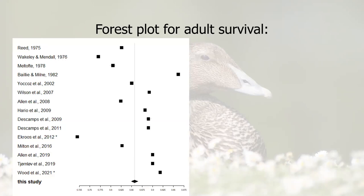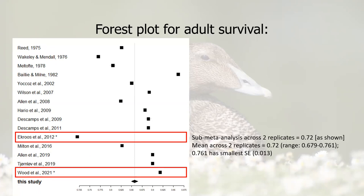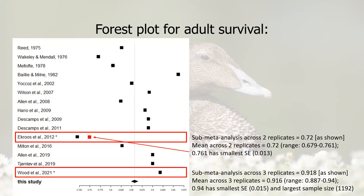To illustrate: the forest plot for adult survival has cases where we've used the sub-meta-analysis coded with an asterisk. For the Acrucetel 2012 case, we conducted a sub-meta-analysis across two replicates, giving a value of 0.72 as shown. It would actually be the same value if we'd just taken a simple mean across these two replicates, albeit less precise. If instead we had sent forward the most precise single estimate — the one with the smallest standard error — that would give 0.761, which is quite significantly higher. Similarly, for Willett et al. 2021, across three replicates the sub-meta-analysis gives 0.918, the mean would give 0.916, but if we picked either the most precise estimate or the study with the largest sample size, this would give 0.94 — again quite substantially larger.